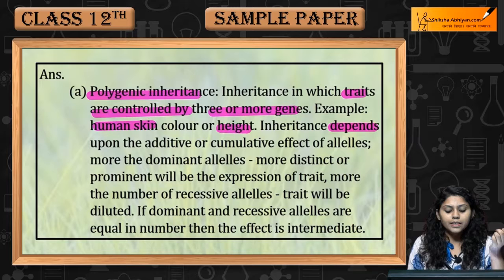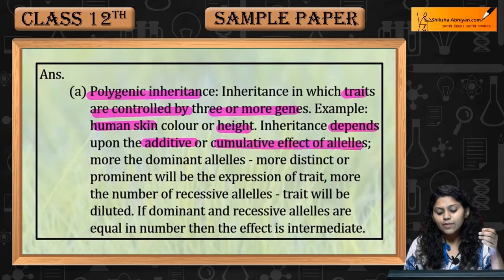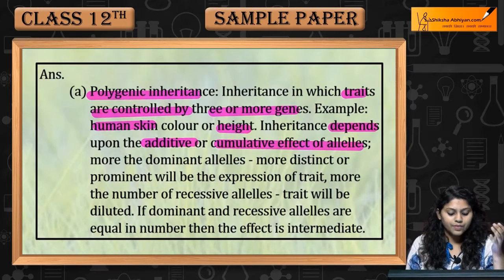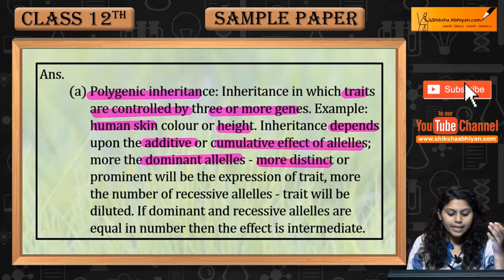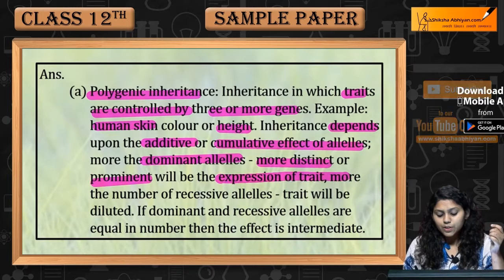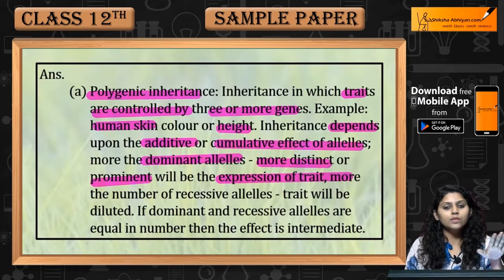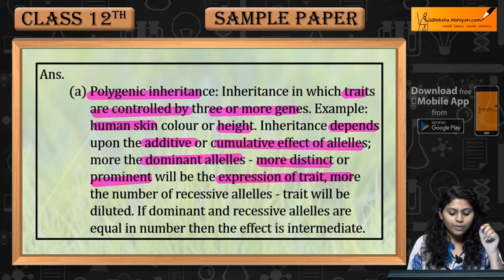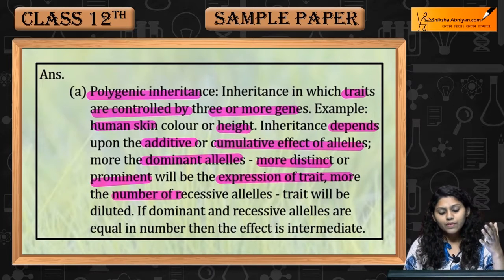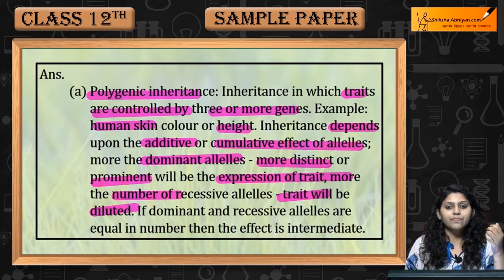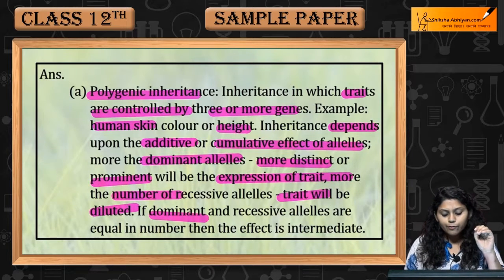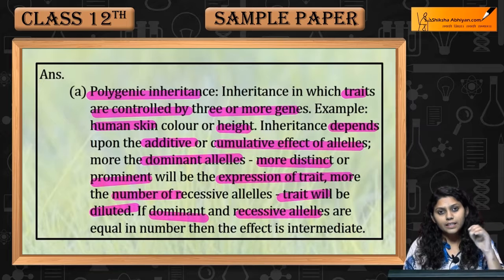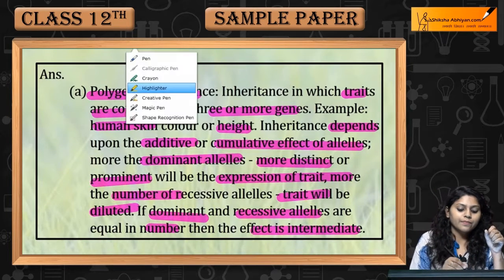Inheritance depends upon the additive or cumulative effect of alleles. More dominant alleles means more distinct and prominent expression of the trait. More recessive alleles means the trait will be diluted. If dominant and recessive alleles are equal in number, then the effect is intermediate.